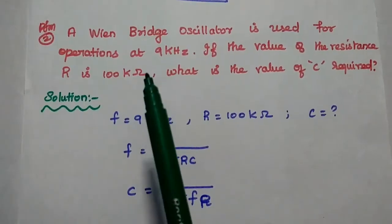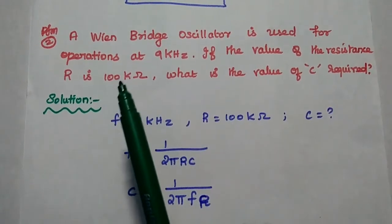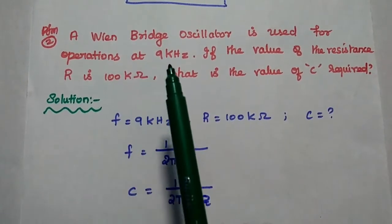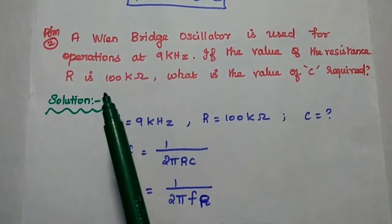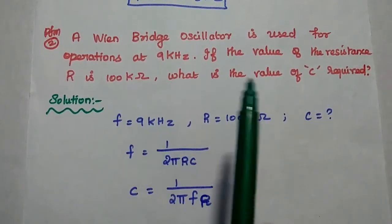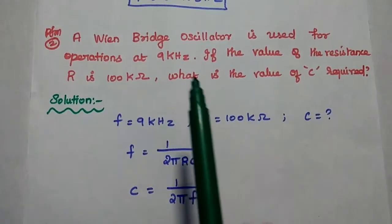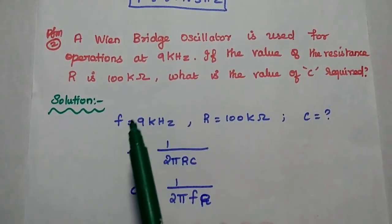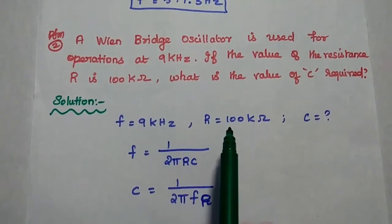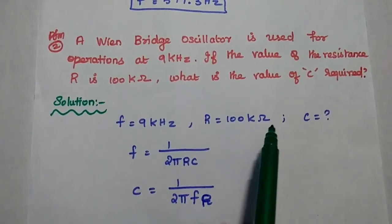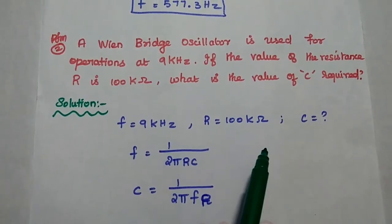Next problem: a Wien Bridge oscillator is used for operation at 9 kilohertz. If the value of resistance R is 100 kilo ohm, what is the value of C required? In this problem, the given data is f equals 9 kilohertz and R equals 100 kilo ohm. We need to find the capacitance value.